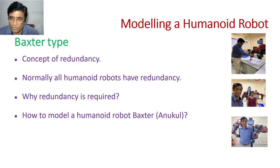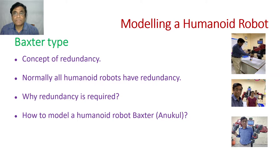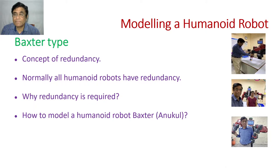If you ask whether the modeling of humanoid robots is entirely different from what we have so far studied, the answer is no. The same Denavit-Hartenberg notation will be used, and the same kind of linear algebra matrix representation of the links will be used. But they are different also, because mostly humanoid robots like the Baxter-type are called redundant robots.